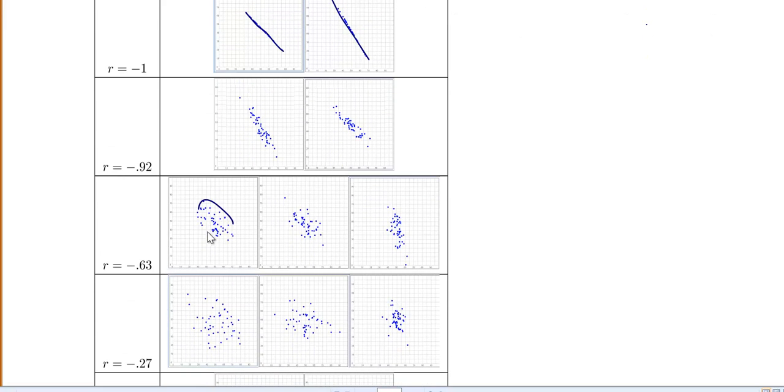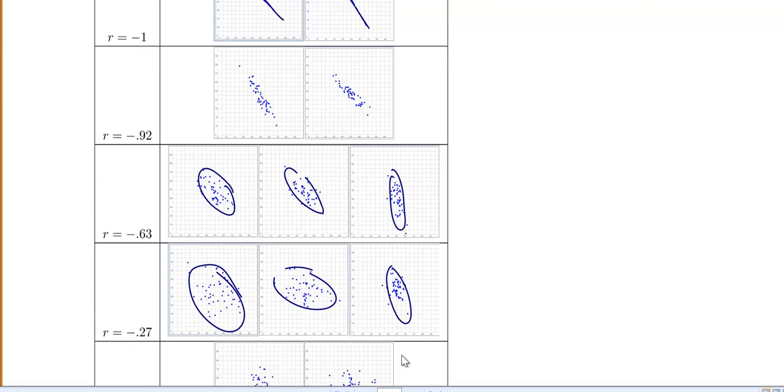My correlation of negative 0.63. So again, three different data sets. Notice how different they look. R equals negative 0.27. Again, very different data sets, but they all have the same correlation.